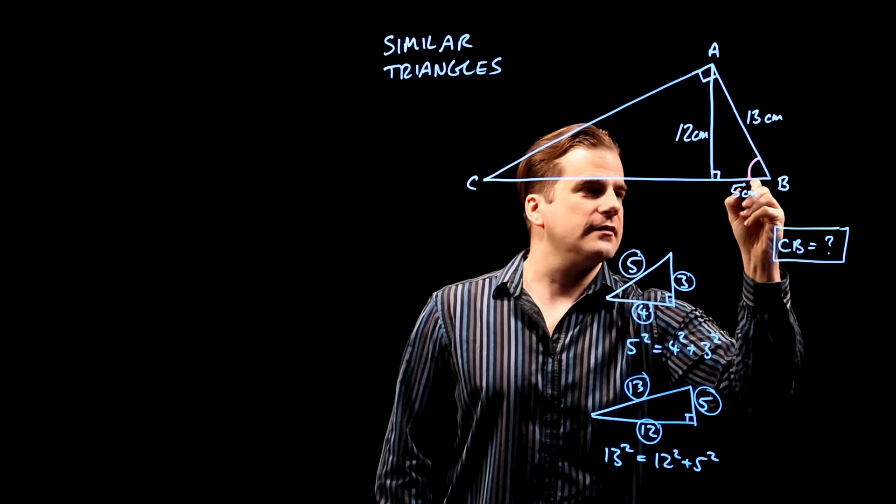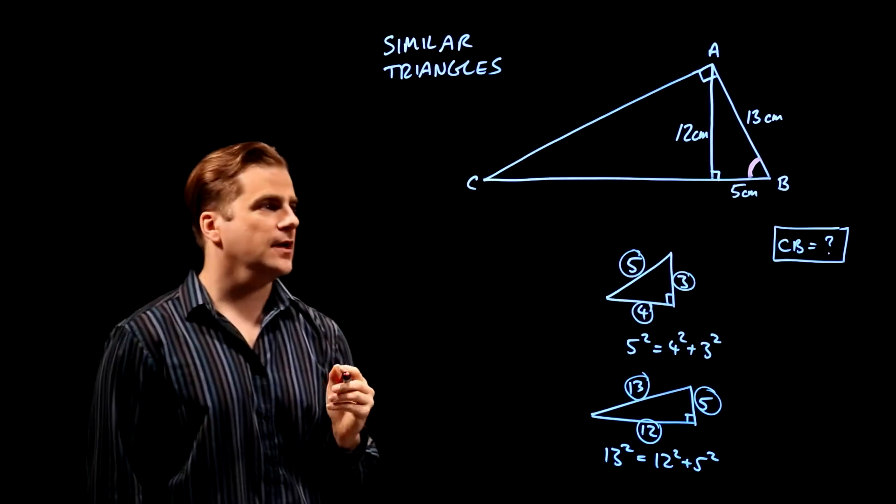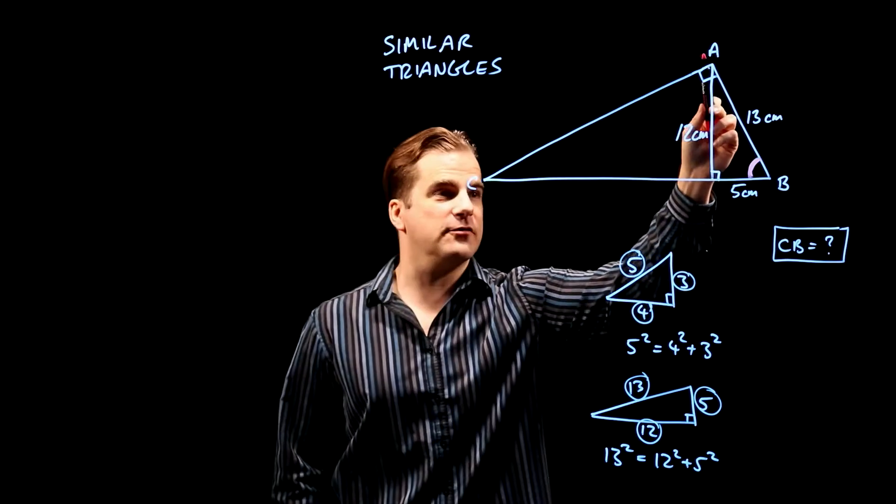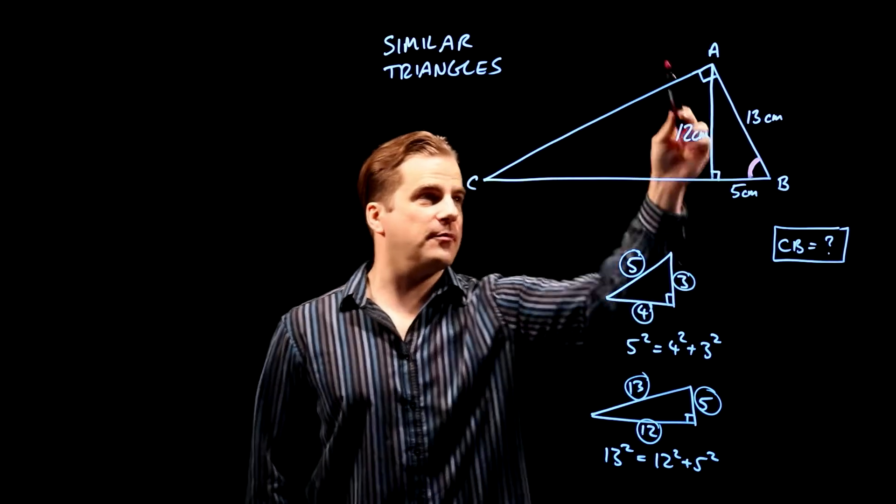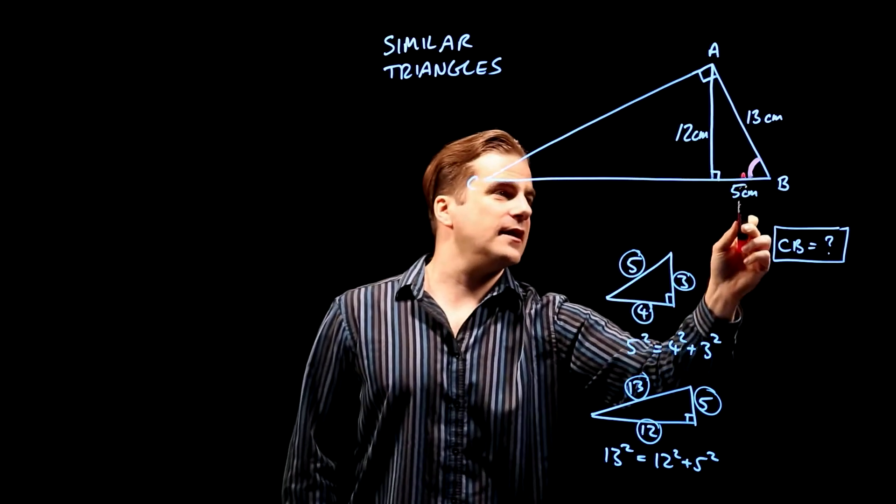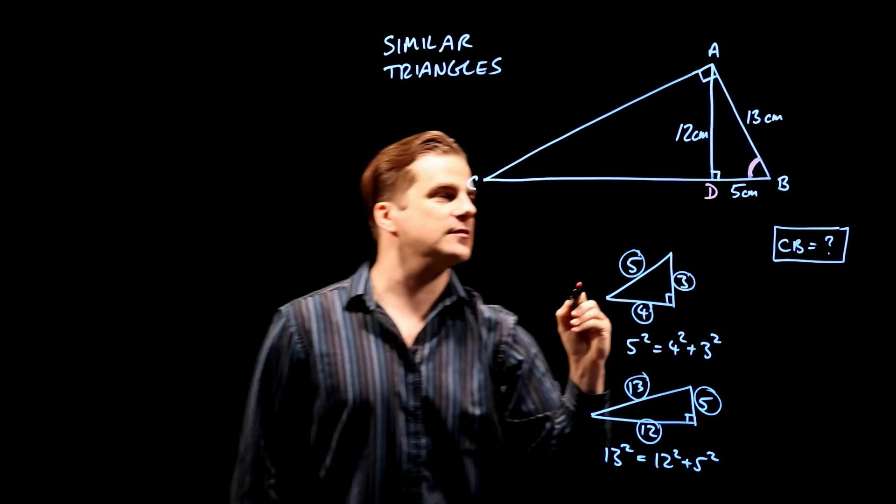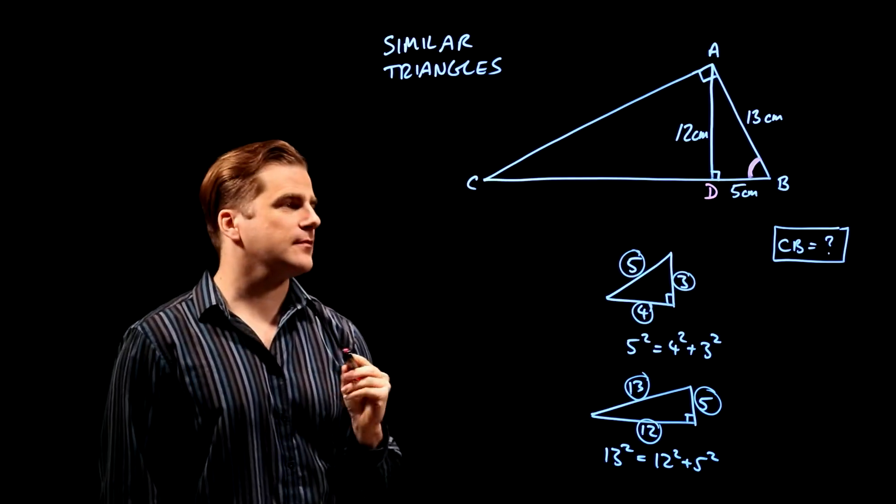Consider this angle here. That angle is definitely part of ABC. It is angle ABC. So it's definitely part of the big triangle and it's definitely part of the smaller triangle. It's part of ABD as well.